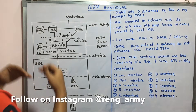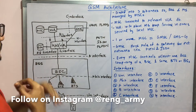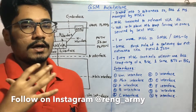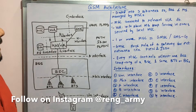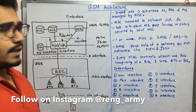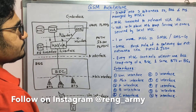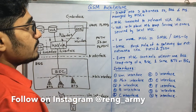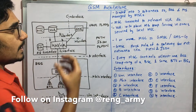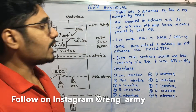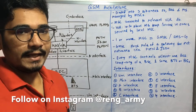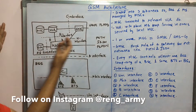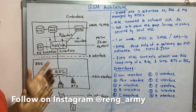Each of these parts is comprised of different databases and different models. We'll be seeing which models are incorporated in which layer. MSCs are connected to relevant VLR databases. The VLR — Visitor Location Register — stores certain information about the MS (Mobile Station). It is a temporary database located in areas serviced by the local MSCs.